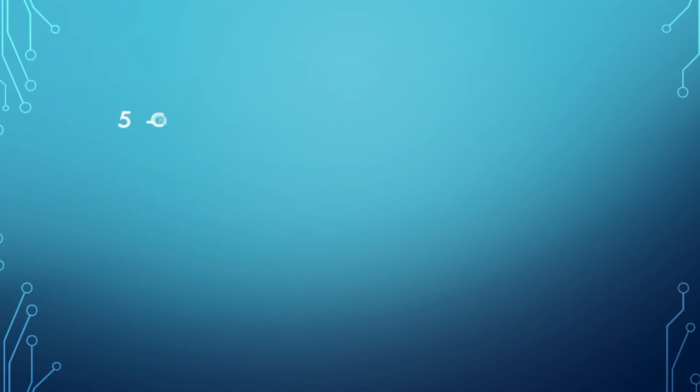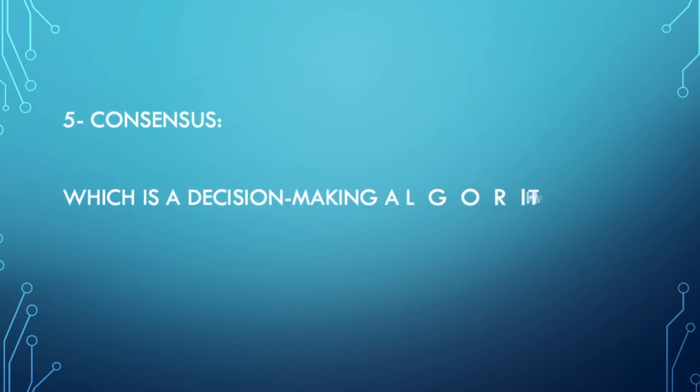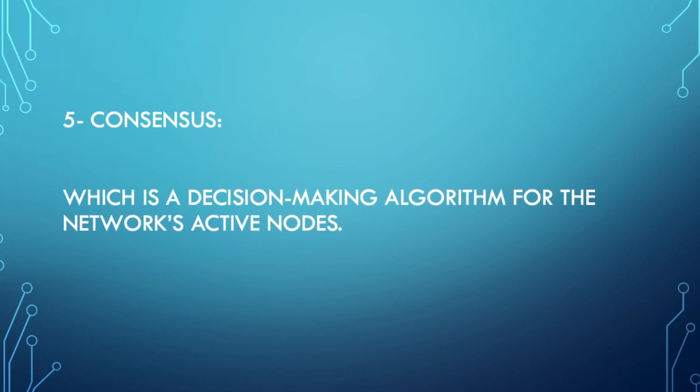And finally, five — it has consensus, which is a decision-making algorithm for the network's active nodes.